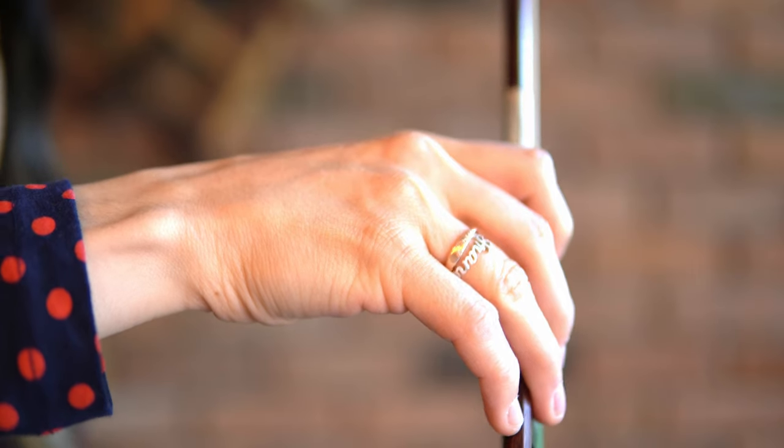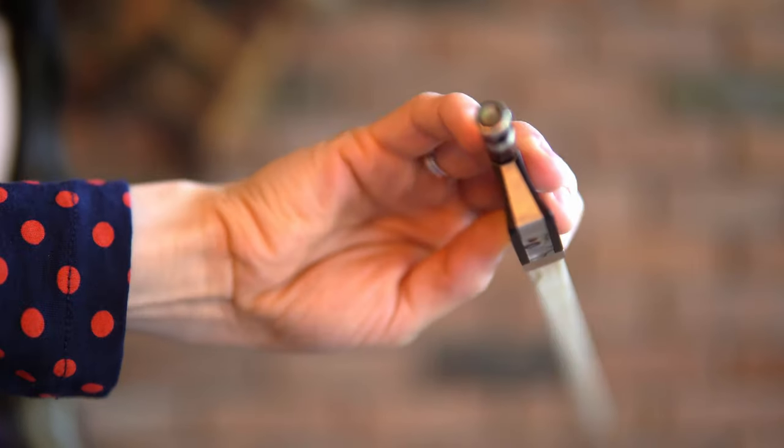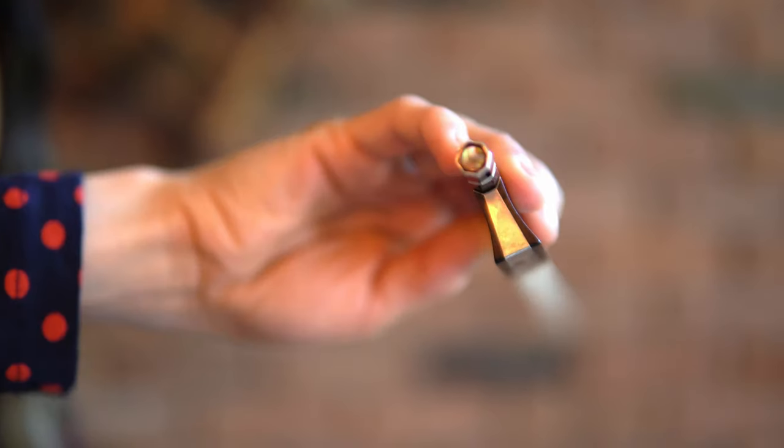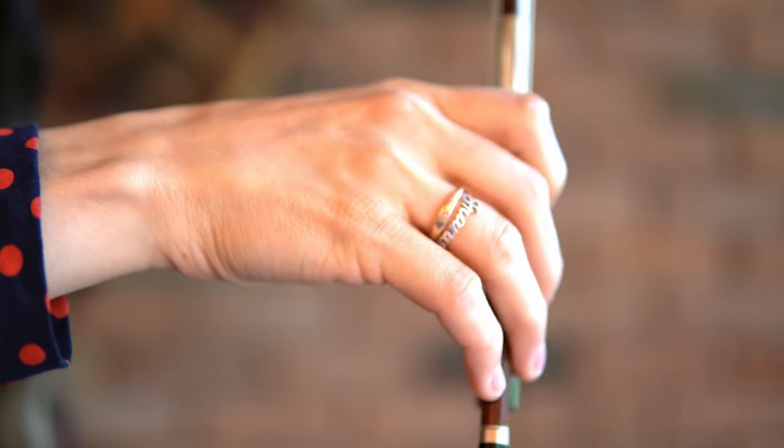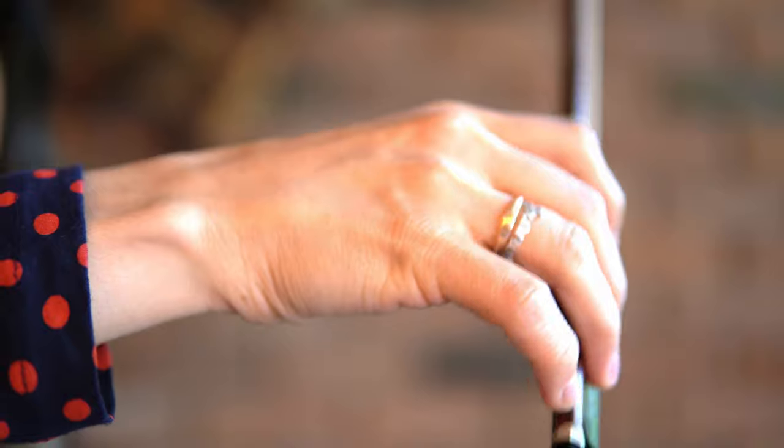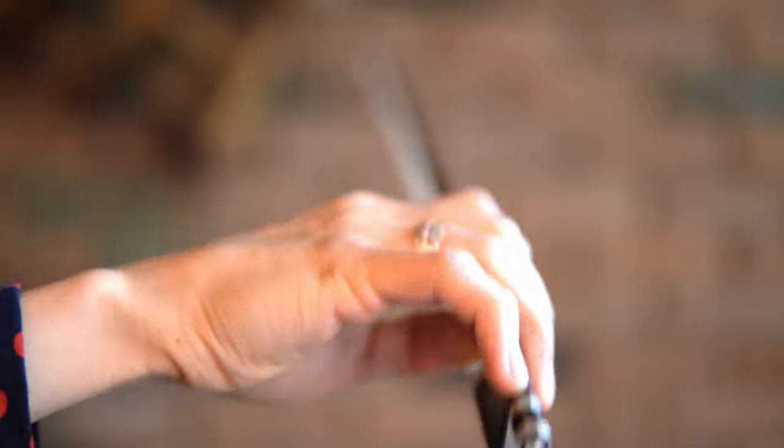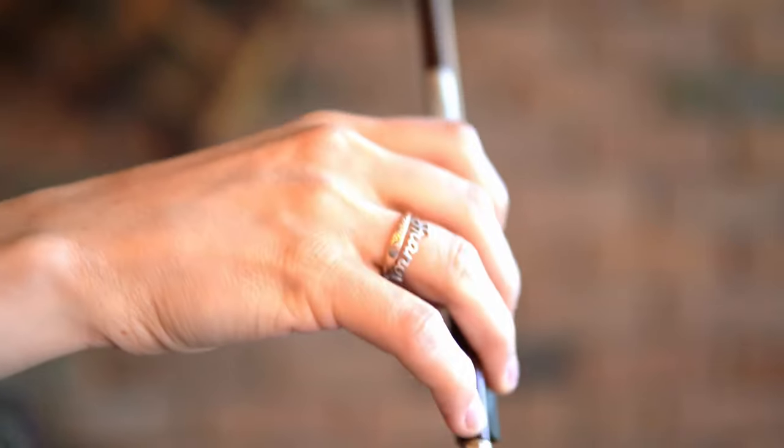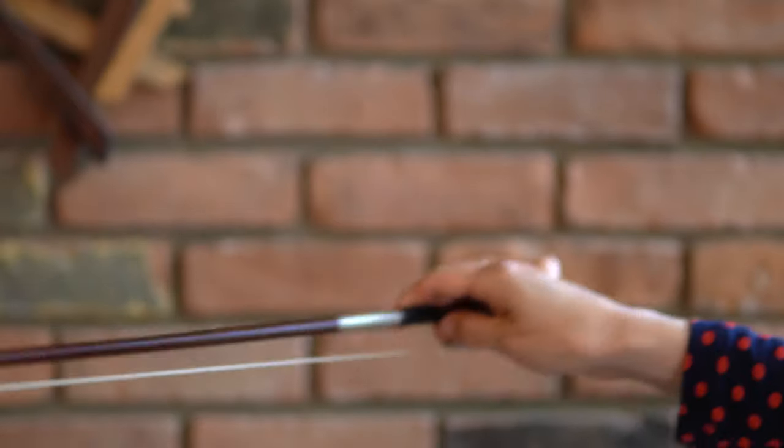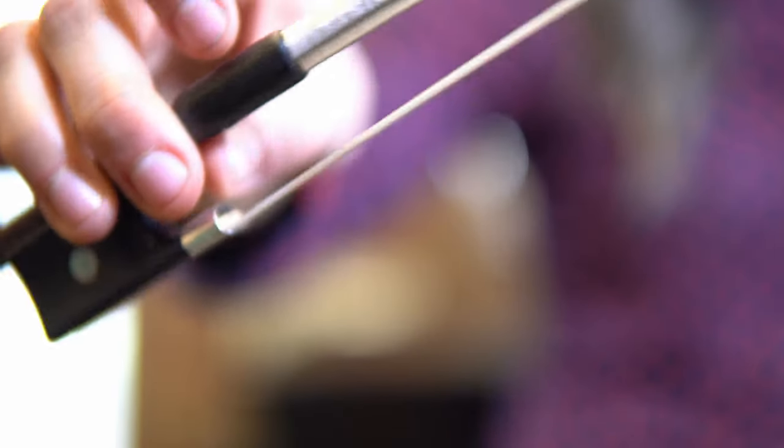Notice the difference between twisting the bow when your thumb is locked in one position and actually letting the bow fall. Here's twisting, here's letting the bow fall. And it's that sensation of falling that is so tricky to want to do.